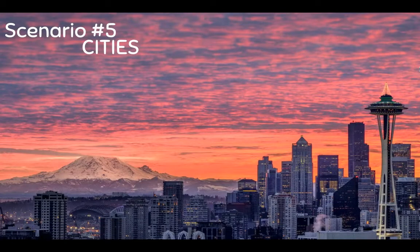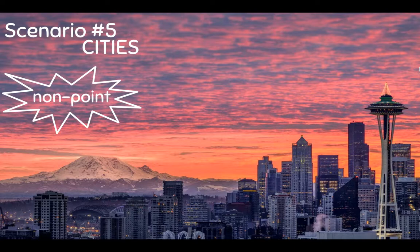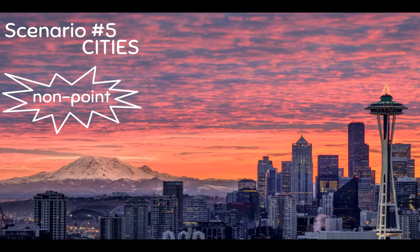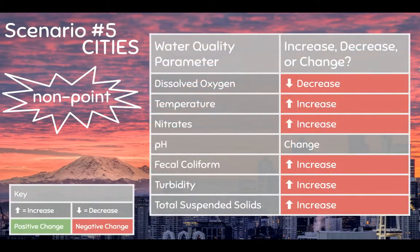Do you think pollution from cities is an example of point source or non-point source pollution? If you guessed non-point, that is correct. Pollution from cities is an example of non-point source pollution since there are many factors in the city contributing to water quality. This includes pet waste, motor oil, gasoline, chemical waste from factories, and even air pollution mixing with the water. Cities cause an increase in turbidity, total solids, temperature, fecal coliform, and nitrates, which in turn may cause a decrease in dissolved oxygen and a change in pH.